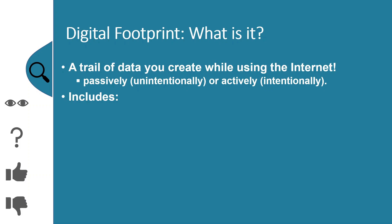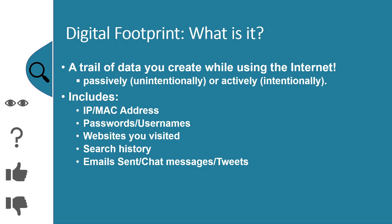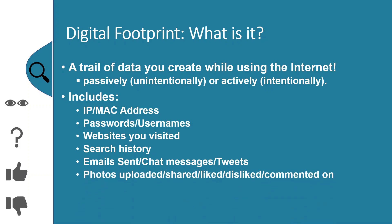What does the digital footprint or trail of data include? It can include your IP address, which links you to your internet service provider — though the IP address changes from time to time. It could be your device's MAC address, your password, your username, the websites you've visited, your search history, emails and chat messages you've sent, tweets you've posted, and photos you've uploaded, been tagged in, shared, liked, disliked, or commented on.